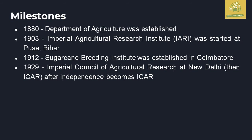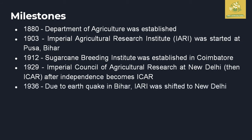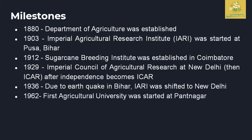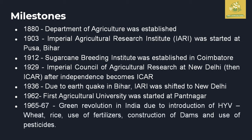Remember: in 1903 IARA was established at Pusa, and in 1929 IARA was established at New Delhi. In 1936, due to an earthquake in Bihar, IARA was shifted to New Delhi — so up to 1936 the head office was only in Pusa, Bihar, after which the main control center moved to New Delhi. In 1962, the first agriculture university was started at Pantnagar.